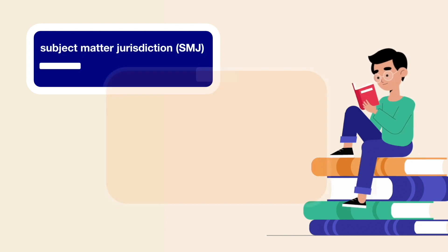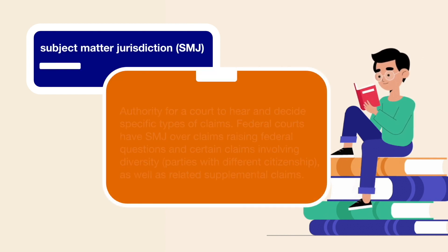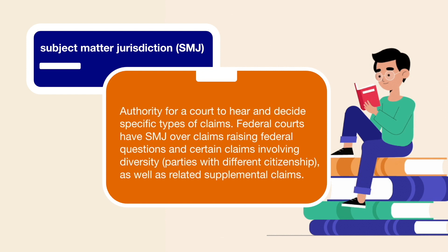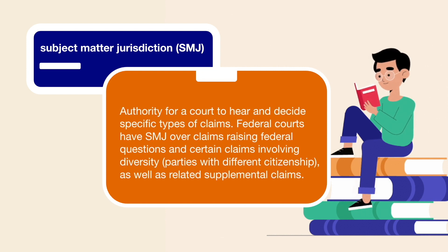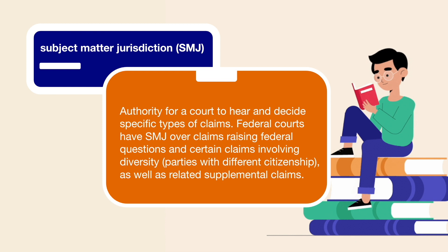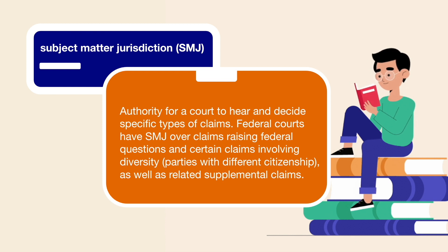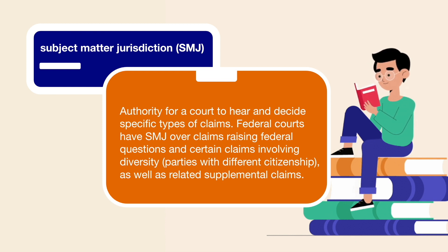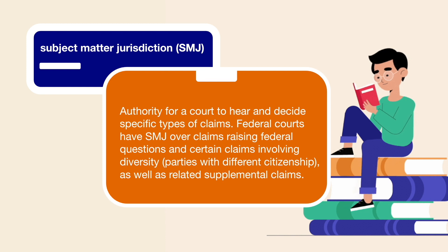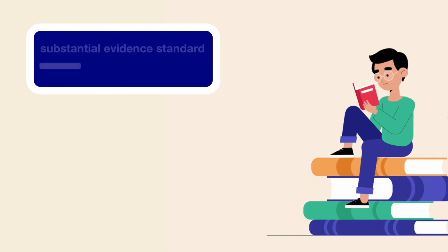Subject matter jurisdiction, or SMJ: authority for a court to hear and decide specific types of claims. Federal courts have SMJ over claims raising federal questions and certain claims involving diversity — parties with different citizenship — as well as related supplemental claims.